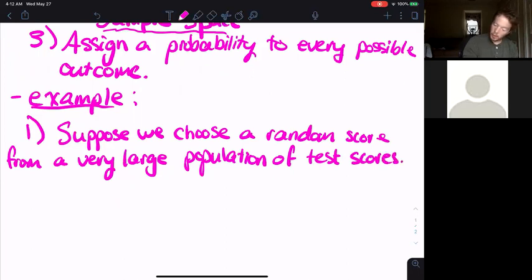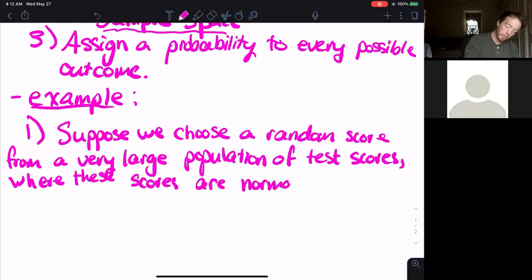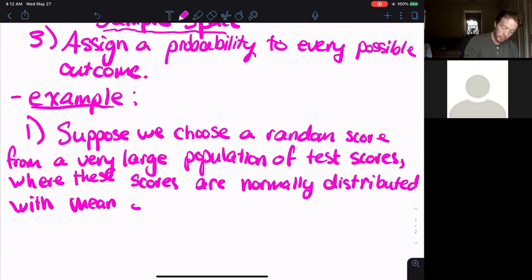Where these scores are normally distributed with mean mu equals 100 and standard deviation sigma equals 10.